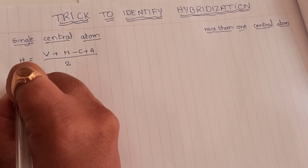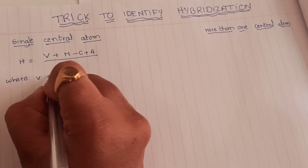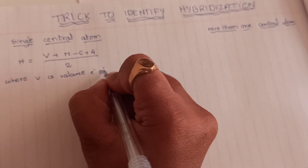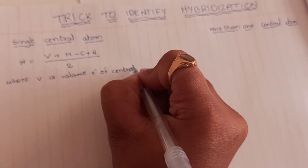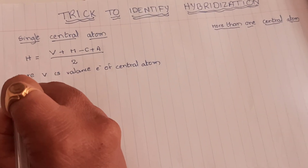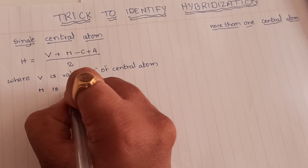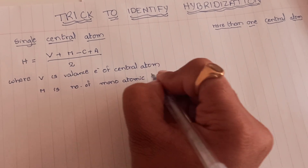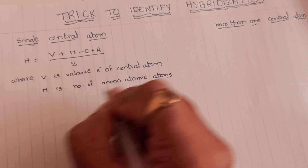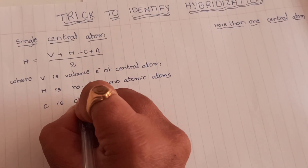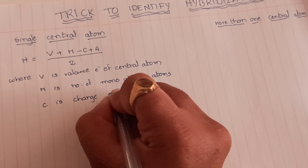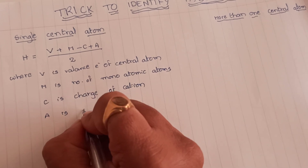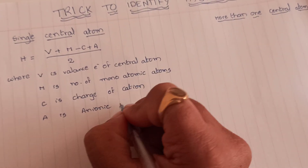Here H means hybridization number, where V is the number of valence electrons of the central atom, M is the number of monoatomic atoms, C is the cationic charge, and A is the anionic charge.